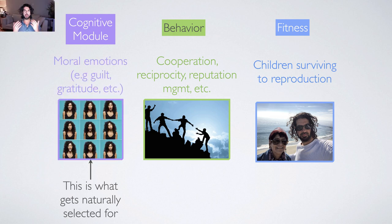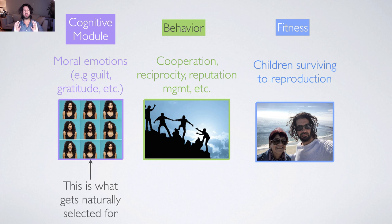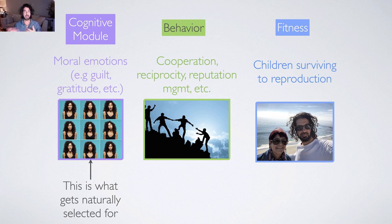For example, if you outfit an organism with a sense of gratitude — to feel compelled to do something nice for somebody who's done something nice for you — then you've provided that organism with a motivational push in the form of an emotion to engage in reciprocal behavior. This ultimately allows them to be a good member of the group, somebody who's not shunned or ostracized, but actually accepted, respected, and hopefully has reproductive success within the group.